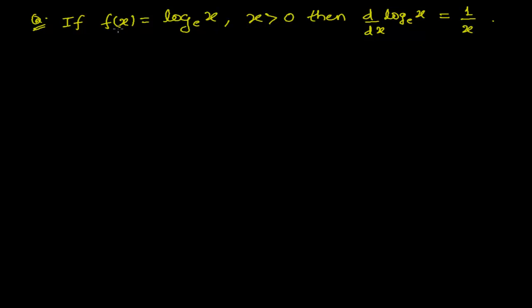Our given function is f(x) = log x to the base e, where x is greater than 0. What we need to prove is that the derivative of log x to the base e is equal to 1 upon x.